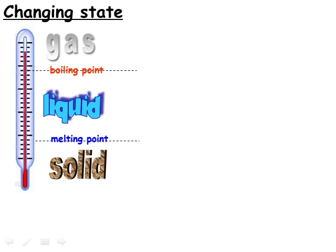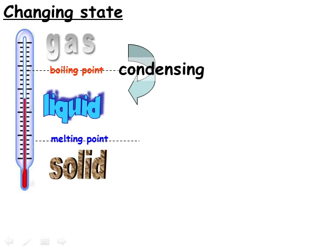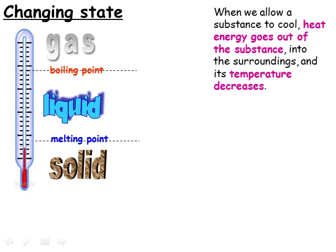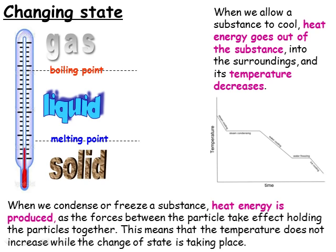Starting with a gas and cooling it down, the gas will first reach its boiling point, at which temperature it will condense and form a liquid. As we continue to cool, the liquid will reach its melting point, at which temperature it will freeze and form the solid. When a substance cools, the heat energy in the substance is being transferred to the surroundings, so the temperature of the substance is decreasing. If we plot temperature versus time as a gas cools, during condensation the temperature does not decrease until all the gas becomes liquid. Similarly, during freezing, the temperature does not decrease as the liquid becomes solid. This is because it is not the heat energy in the substance that's being lost to the surroundings during these changes, but the energy produced by the attractive forces between the particles as they lock together to prevent the particles moving about.